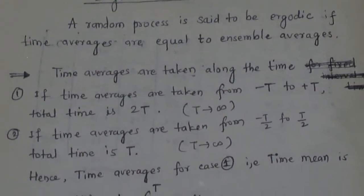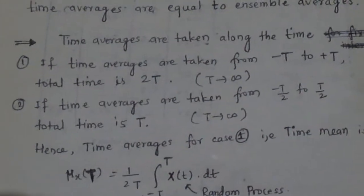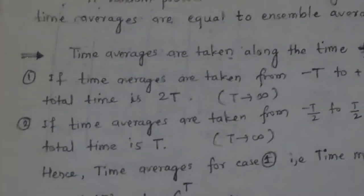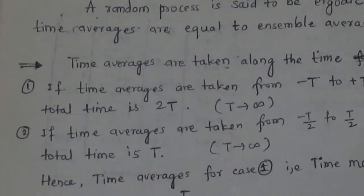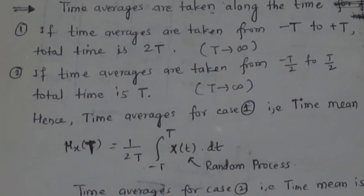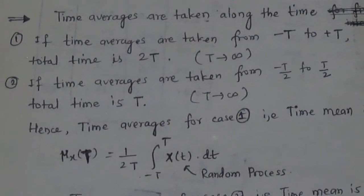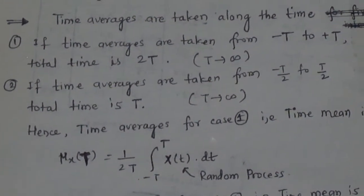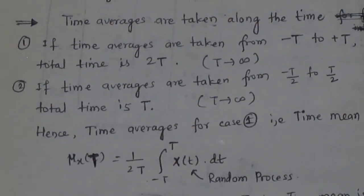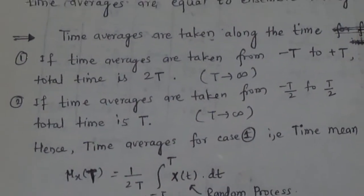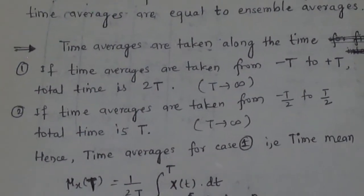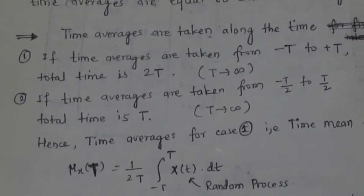Now we will see what is the time average. Time averages are taken along the time. Consider here if the time averages are taken from minus T to plus T, the total time is 2T where this T is approaching to infinity. For the entire time interval, you have to take the time average along the time axis.